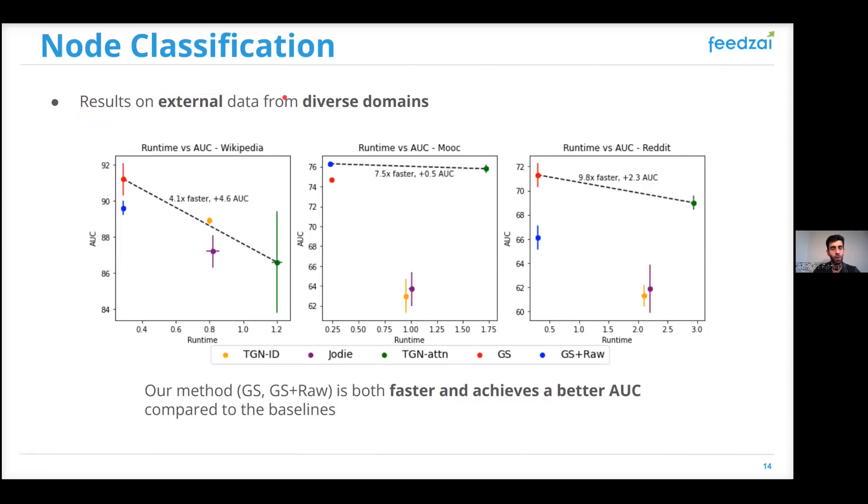About the results obtained in the node classification task, here we show the results in the external datasets. So the y-axis represents AUC, and the x-axis represents runtime. And so the best models are the ones on the top left corner, meaning that they achieve the highest AUC while being the fastest. Here we show two variations of our Graph Sprints method. And we can see, for instance, in Reddit, that Graph Sprints is almost 10 times faster while achieving a 2.3% increase in AUC compared to TGN attention baseline.